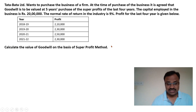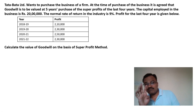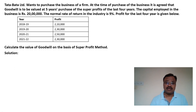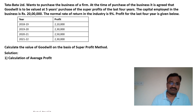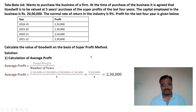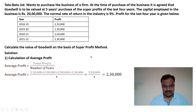In this method there are four steps. In the first step we calculate average profit the same way as before — total profit divided by number of years — and the average profit is again 2,30,000.